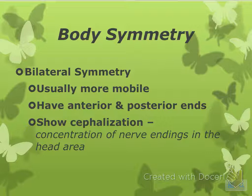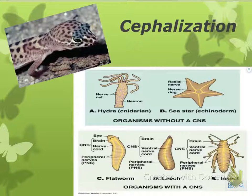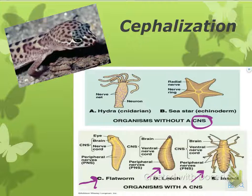Bilateral symmetry animals are usually more mobile. They have anterior and posterior ends, and they show something called cephalization, which is a concentration of nerve endings in the head area. CNS stands for central nervous system. Things like a hydra or a sea star don't have a central nervous system, but if you look at a flatworm, a leech, or an insect, they all have a brain or somewhere where all of the nerves are centralized.